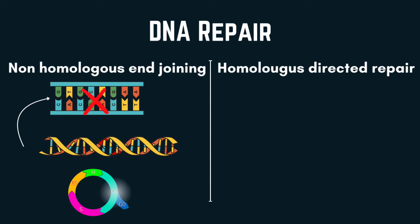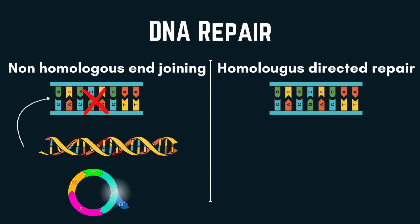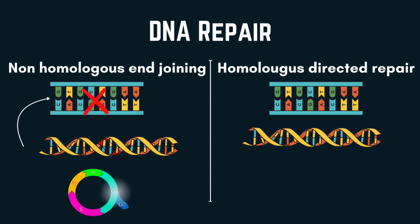The second is Homologous Directed Repair, or HDR. This is a more preferable repair process. Here, there is a homologous DNA sequence to be used as a template, allowing for more accurate correction of the repair. This mechanism is active during S and G2 phases. Synchronizing cells to these phases using specific chemical agents can increase HDR efficiency.